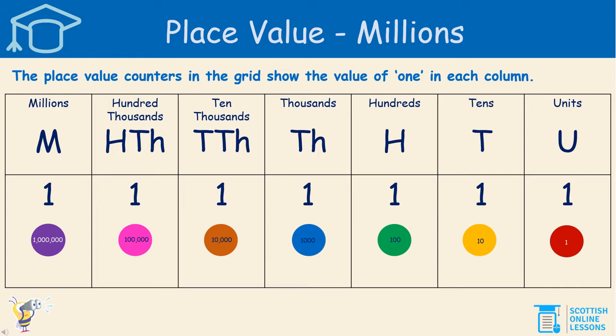The thousands column, the value of 1 is 1,000. The ten thousands column, the value of 1 is 10,000. In the hundred thousands column, the value of 1 is 100,000. And in the millions column, the value of 1 is 1,000,000. Just remember, there are six zeros after 1 million — so that's something to keep in mind.